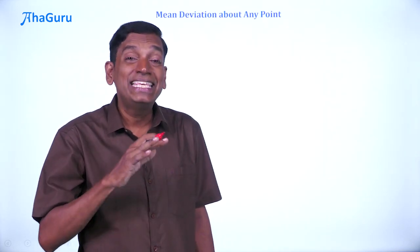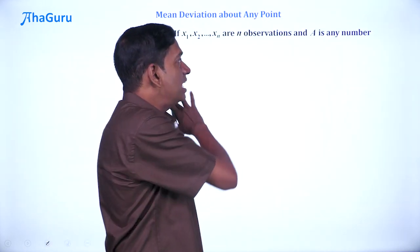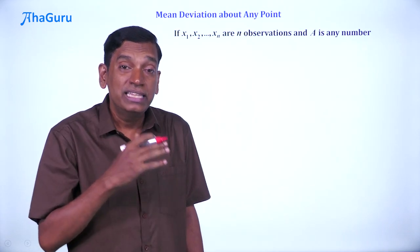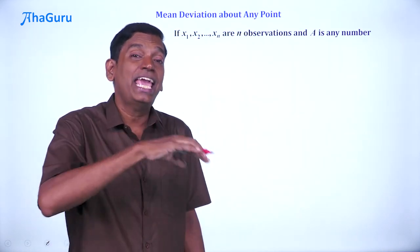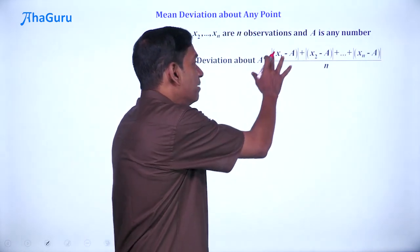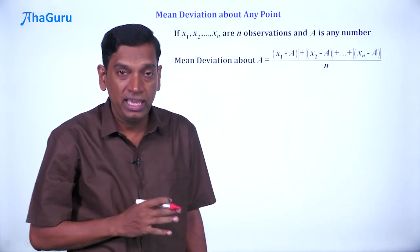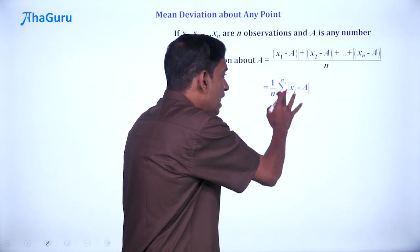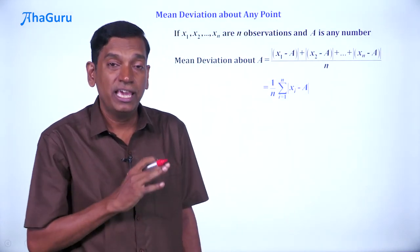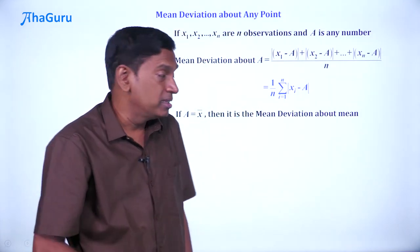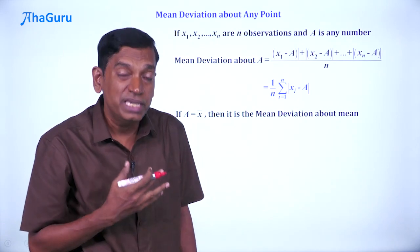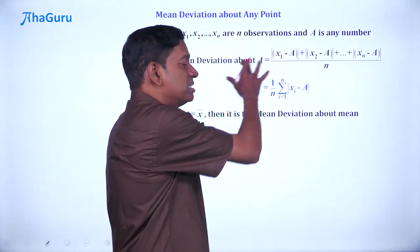So far, we have been calculating the sum of deviations or the average of deviations about the mean. Now, we are going to see how to compute mean deviation about any point. Again, if x1, x2 till xn are n observations and a is any number, then the mean deviation about a is going to be defined this way: |x1 - a| + |x2 - a| and so on till |xn - a|, the whole by n. And we can write this as (1/n)Σ|xi - a|. Now clearly, if a equals x̄, then this quantity is simply the MD about mean, which we already computed. This is just a more general formula.